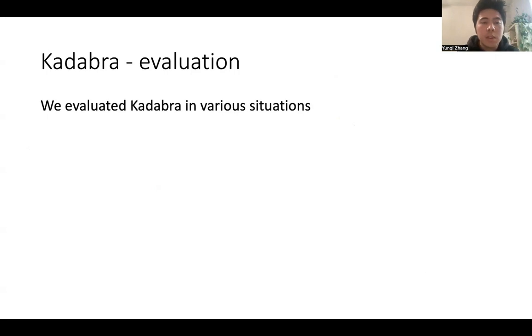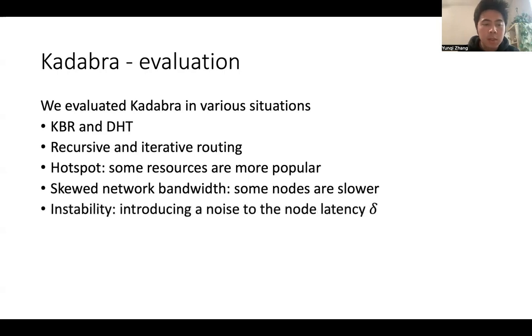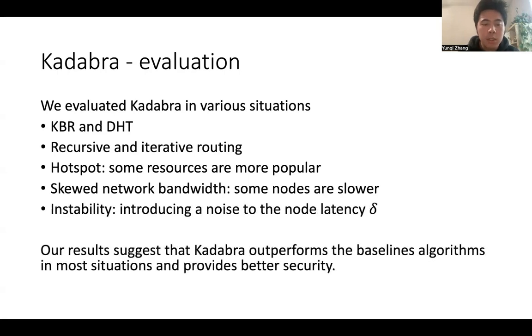To sum up, we evaluated Cadabra in various situations. We have KBR and DHT. KBR is K-Based routing. We evaluated on the recursive and iterative routing. We also evaluated on the hotspot. Some resources are more popular. We have studied network bandwidth and instability. Our results suggest that Cadabra outperforms the baseline algorithms.